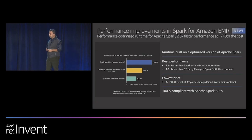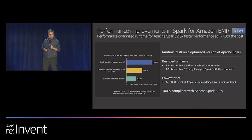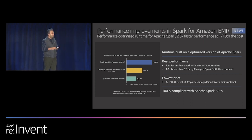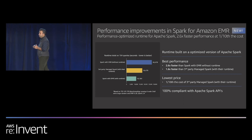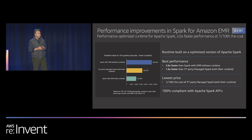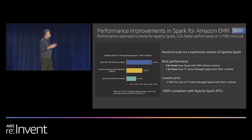So what is this runtime environment? It is a performance-optimized version of Apache Spark that is 100% compliant with the open-source version. We are not breaking any API compatibility, not changing how you use Spark. If you're using Spark 2.4, it will run perfectly fine. But we are adding performance optimizations that make Spark run faster on top of EMR.